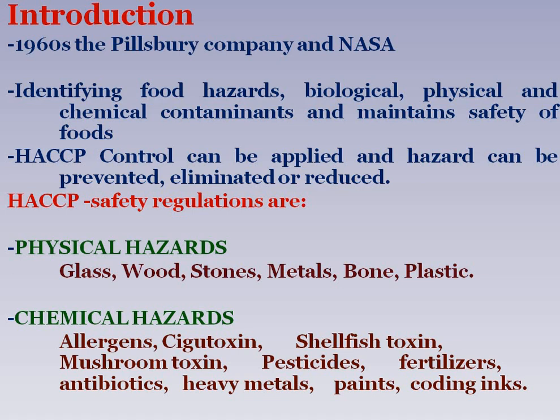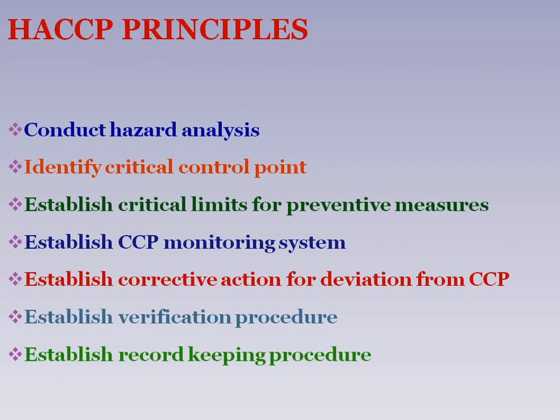Physical hazards include glass, wood, stone, metals, bones, and plastics, which can contaminate food material and produce harmful effects. Chemical hazards include allergens, sugar toxins, shellfish toxins, mushroom toxins, pesticides, fertilizers, antibiotics, heavy metals, paints, coatings, and inks — all of which can produce harmful effects.